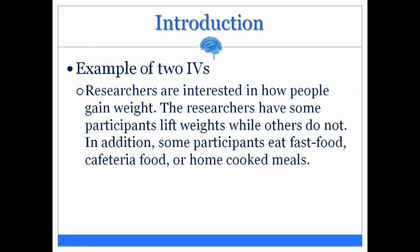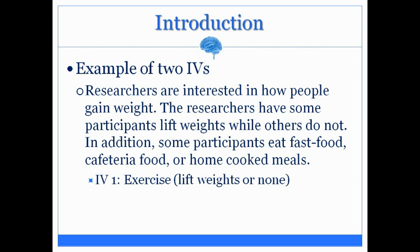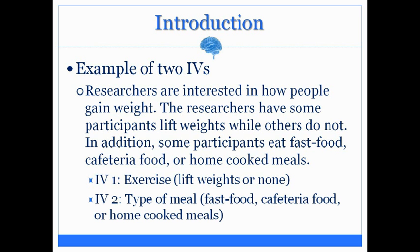Here's an example that has two independent variables. Researchers are interested in how people gain weight. Some participants lift weights while others do not. In addition, some participants eat fast food, cafeteria food, or home-cooked meals. The first independent variable is exercise, which consists of two levels: lifting weights or not lifting weights. The second independent variable is the type of meal consumed, which consists of three levels: fast food, cafeteria food, and home-cooked meals. So we have two independent variables — the first has two levels, and the second has three levels.